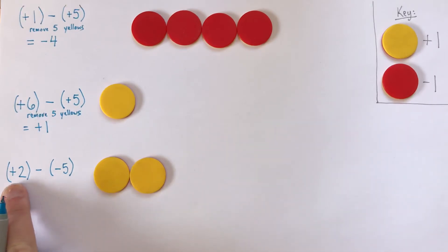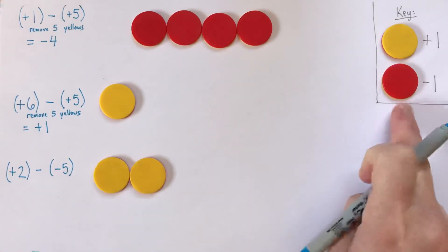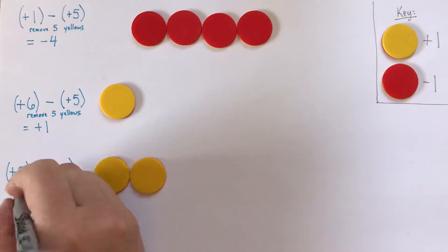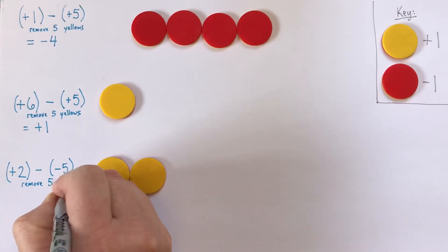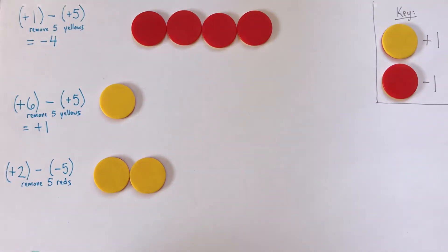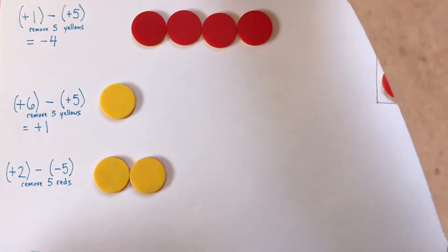Alright, back to the second one. Positive 2. We've got that out. And we would like to take away negative 5s, or 5 reds. So, remove 5 reds. I don't have any yet. So, I'm going to need some zero pairs. So, now I really do need the zero pairs.